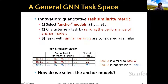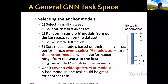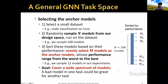The next question is how to select the anchor models. We use three steps. First, pick a small dataset that is easy to work on. Second, randomly sample N models from our design space and run them on the dataset — for example, sample 100 models from the entire design space. Third, sort these models by their performance and evenly select N models as anchor models whose performance ranges from worst to best. Our goal is to come up with a wide spectrum of models, since a bad model in one task could actually be great for another task.